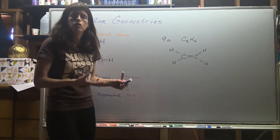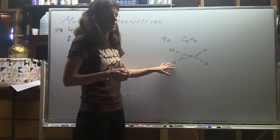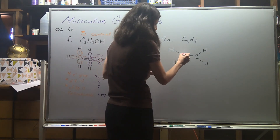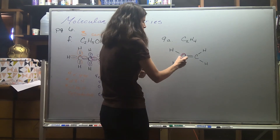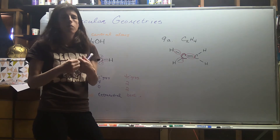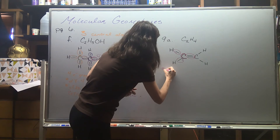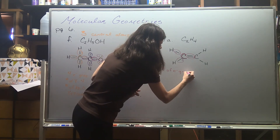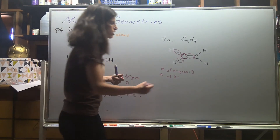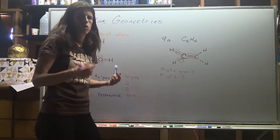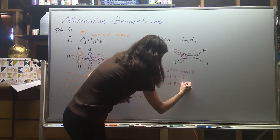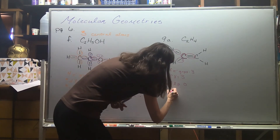Moving on to structures with double and triple bonds — C₂H₄ on page six. There are two central atoms. For the first carbon, I circle the two single bonds and the double bond, but count the double bond once. So the number of electron groups is three. The number of X's is also three — all three are bonded to something else. Number of lone pairs is zero. A 3-3-0 combination is trigonal planar.